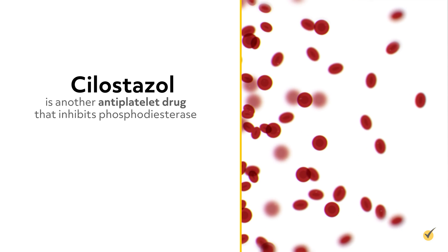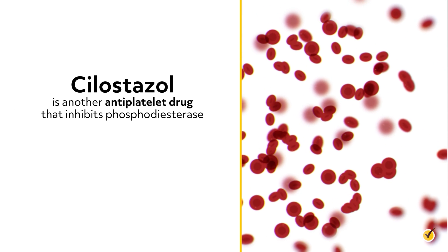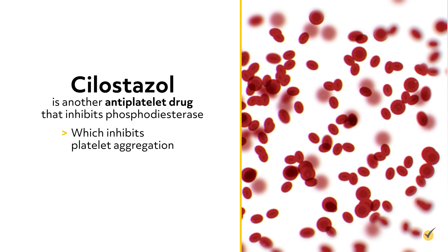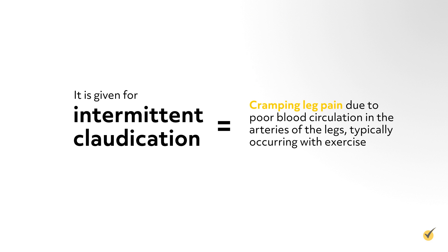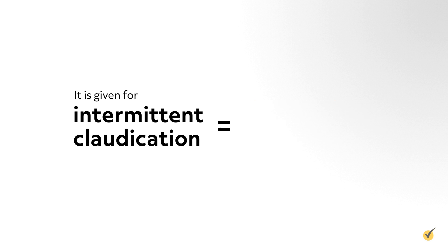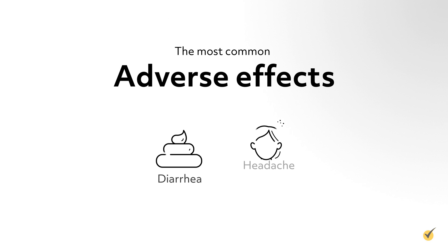Cilostazol is another antiplatelet drug that inhibits phosphodiesterase, which inhibits platelet aggregation and produces vasodilation. It is given for intermittent claudication, or cramping leg pain, due to poor blood circulation in the arteries of the legs, typically occurring with exercise. Symptoms usually improve within 2–4 weeks, but may take up to 12 weeks. The most common adverse effects are diarrhea and headache.